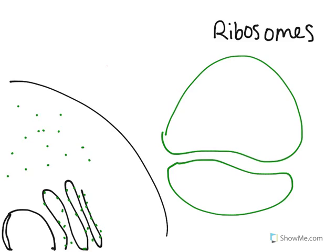So first we're going to start out with ribosomes. Ribosomes are made out of rRNA, and ribosomes are mostly created by the nucleolus, which is a structure inside the nucleus.